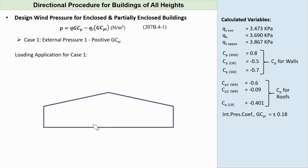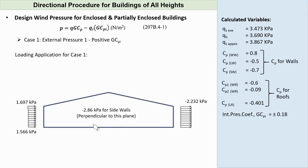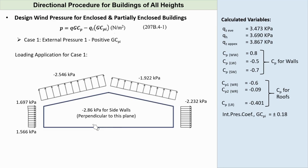Knowing all the surface pressures, we can draw the wind action for Case 1. Pressure in the windward wall varies from 1.566 to 1.697 kilopascals acting towards the surface. For the leeward wall, negative 2.232 kPa acting away from the surface. Side walls, negative 2.86 kPa. Windward roof, negative 2.546 kPa. And for the leeward roof, negative 1.922 kPa.